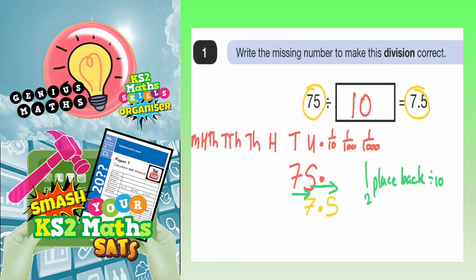If the digits move two places backwards, then that means you must have divided by 100. And if the digits move three places back, that means you must have divided by 1,000.